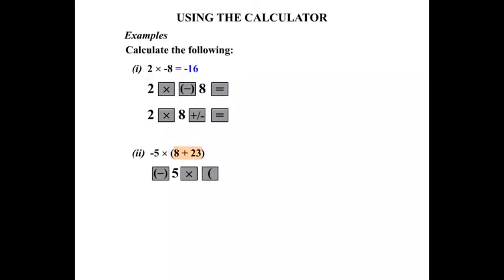Then 8 plus 23. And then a right bracket, a closing bracket. We press equals then. If you've done it correctly, you will get negative 155.